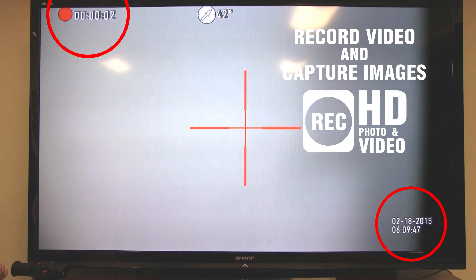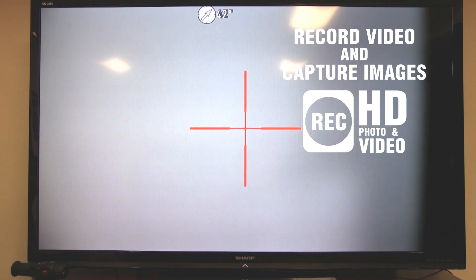Press it once to start recording. You'll see a counter in the top left corner of the screen with a red dot. Press the right button again to stop recording. It's that simple.